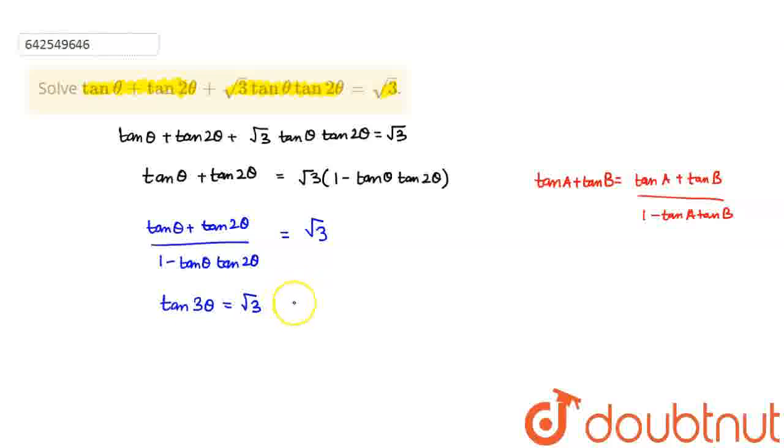So it says tan 3 theta is equal to root 3. At what value of tan theta I receive root 3? At tan pi by 3, correct? At tan pi by 3. So the general equation would become 3 theta is equal to n pi plus pi by 3 where n belongs to integer z.